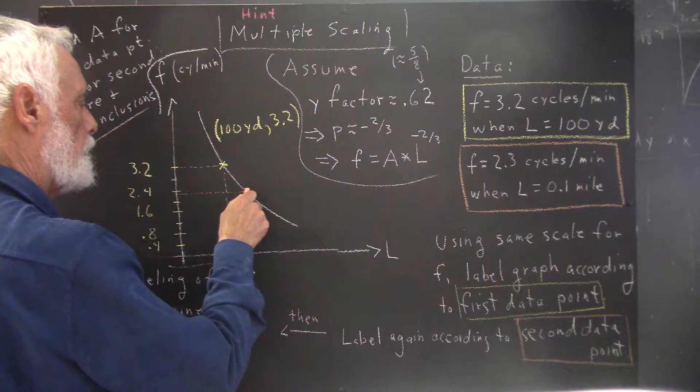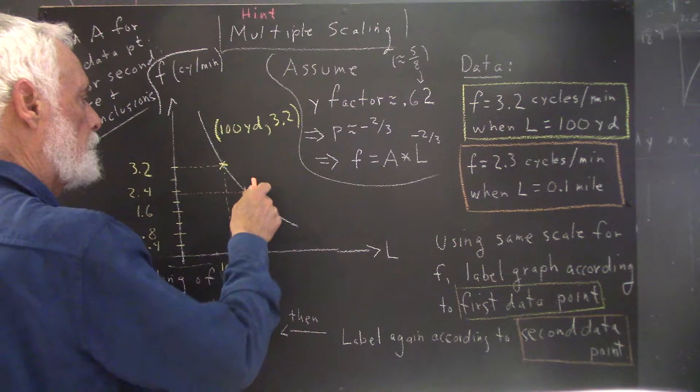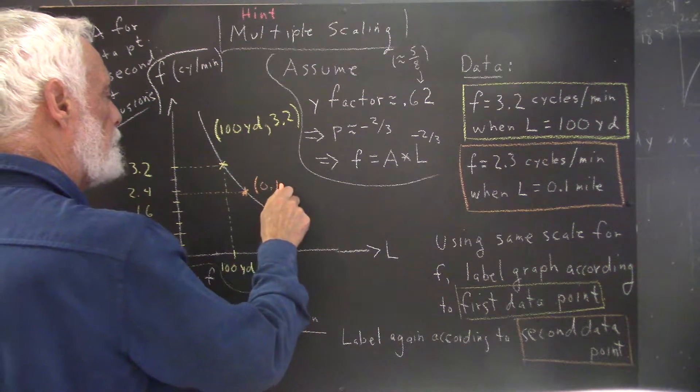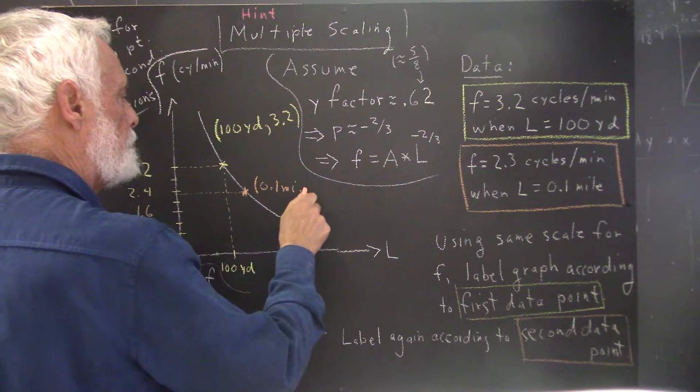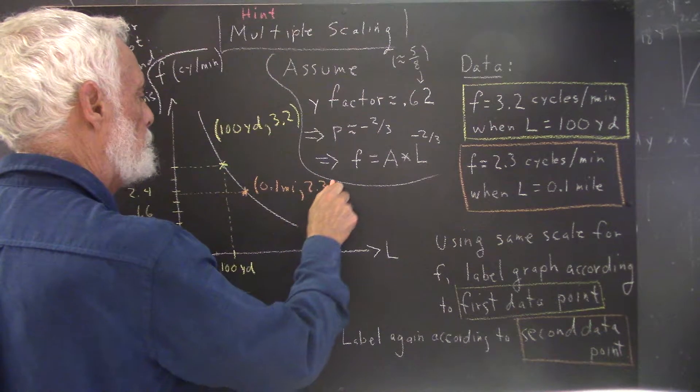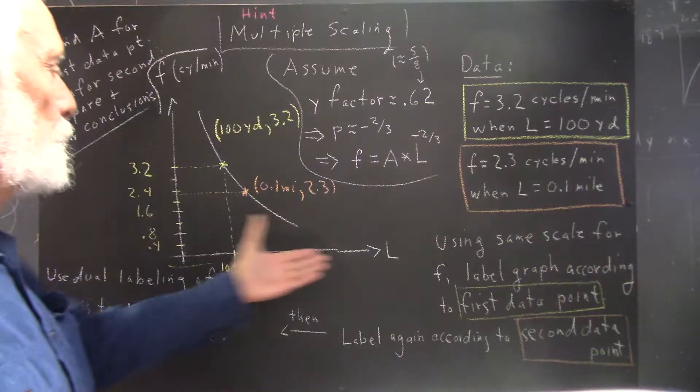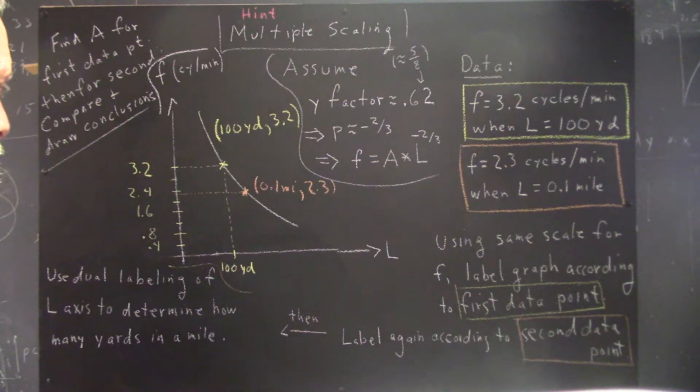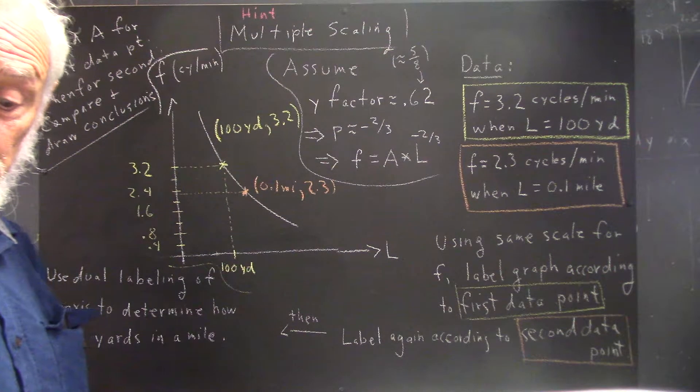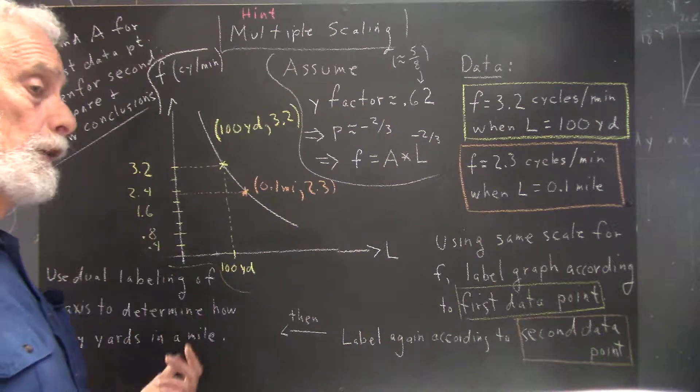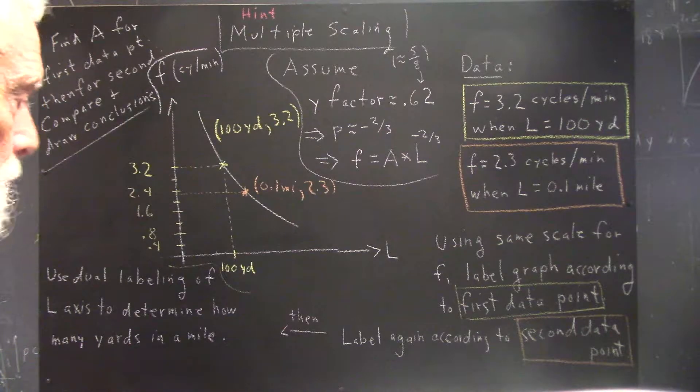So, I've got this point on the graph and this corresponds to what? 0.1 mile, 2.3. Well, this allows me now to relabel the L-axis in terms of miles. Of course, we've gone probably units of tenths of a mile, maybe break that in half to go to five hundredths of a mile.